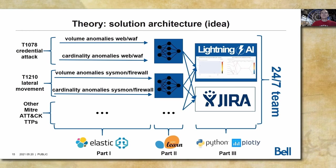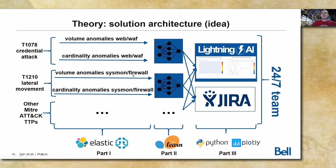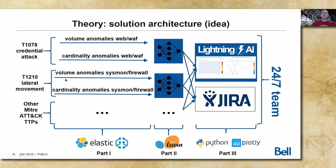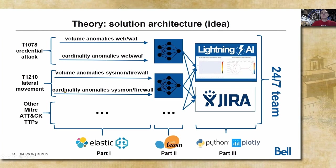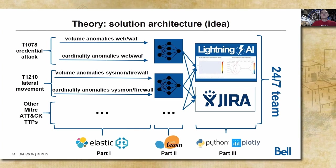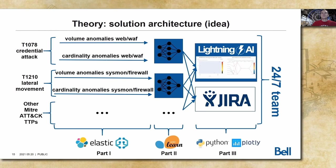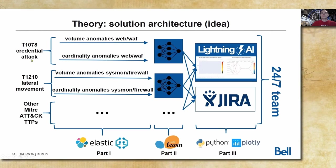We can extend this to lateral movement. Here we will be analyzing different types of logs — let's say sysmon logs and firewall logs. We can still use volume and cardinality anomalies, but here volume anomaly will stand for the number of connections from a given source IP, and cardinality anomaly will describe how many different destinations that source IP is trying to connect to. This is how we extend our analysis to other TTPs. So we have many unsupervised machine learning jobs, they generate anomalies — what next?